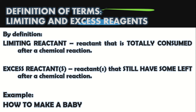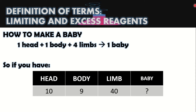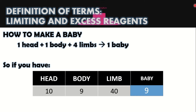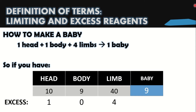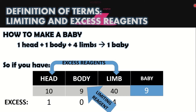For example, how to make a baby. In order to make a baby, you will need one head, one body, and four limbs. So, if you have ten heads, nine bodies, and forty limbs, how many babies can you make with a complete set of body parts? The answer is nine. Bakit nine? Bakit hindi ten? That is because yung body natin ay siyam lang. Ibig sabihin, mauubos na yung body samantalang yung head at yung limbs meron pang naiwan. So, ang excess natin ay the heads and the limbs, at yung body naman ang ating limiting reagent. Kasi naubos na siya — siya yung nag-dictate na mag-i-stop na ang production.